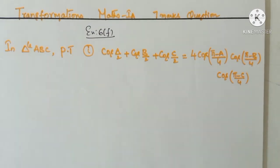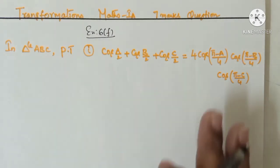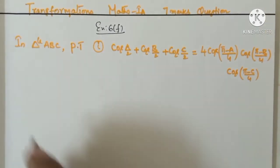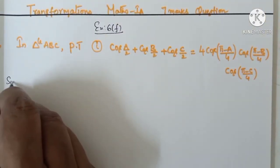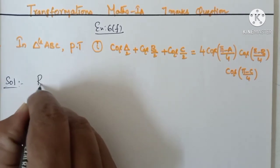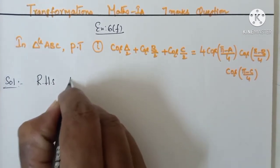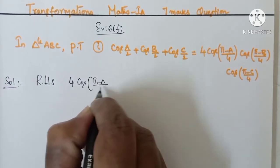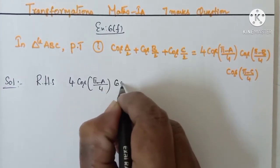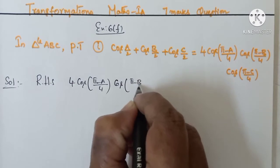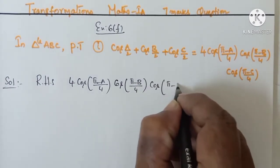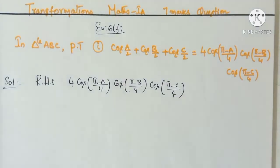For these types of problems — 4 problems of this kind — do not take LHS; instead take RHS and approach from there. For this type of problem, we take RHS. So let us take RHS: 4 cos((π−A)/4) · cos((π−B)/4) · cos((π−C)/4). This is RHS.